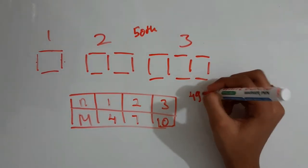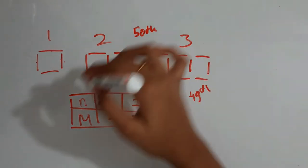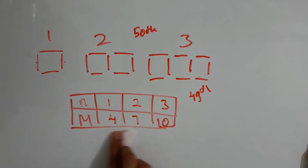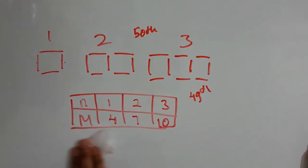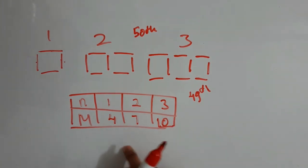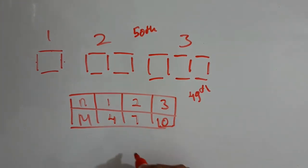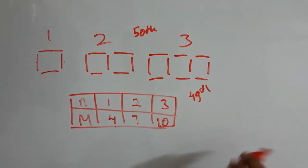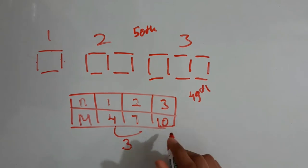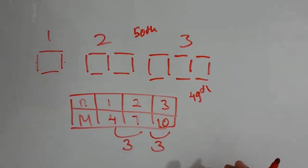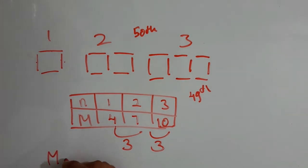If you get a question like 'find the matchsticks for the 49th figure,' you can't keep drawing boxes one by one. The formula is derived by seeing how many matchsticks increase for each figure. From 4 to 7 is an increase of 3, and from 7 to 10 is also an increase of 3. So the formula is m = 3n + 1.